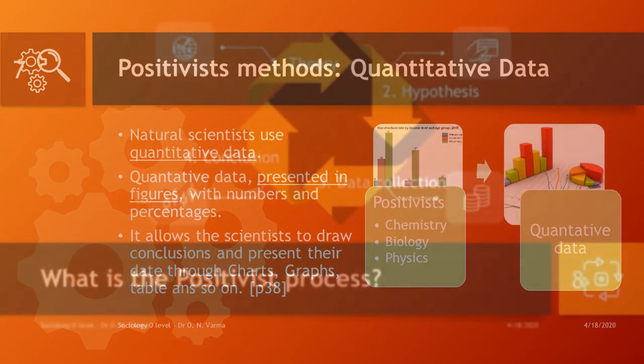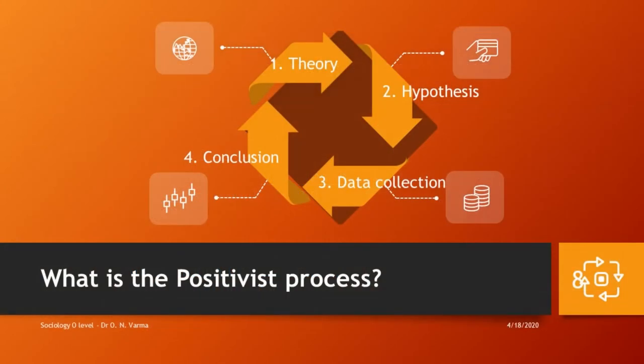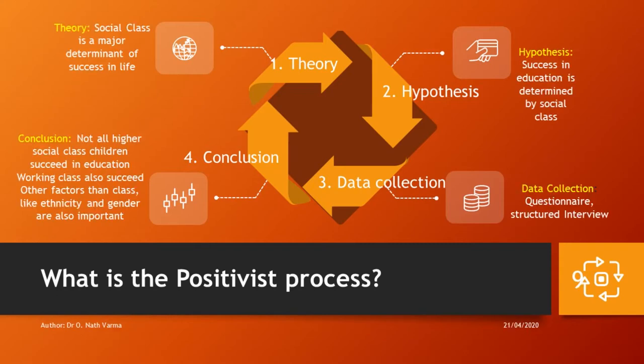What exactly is the positivist method? To understand this you have to understand the process used by the positivists. The positivist starts with a general theory from where they would draw a hypothesis, collect data, and analyze those data to reach conclusions. This is generally the process used by the positivist which can be adopted in the social sciences as well. We are going to take an example from sociology of how sociologists use the positivist approach.